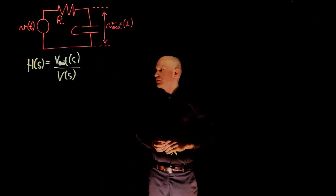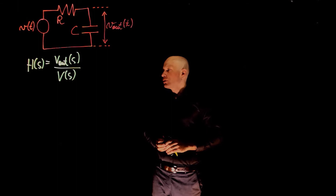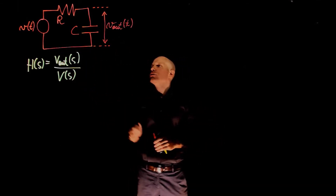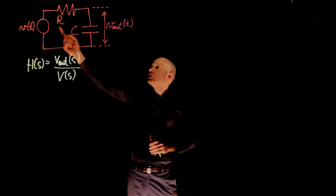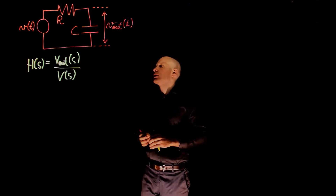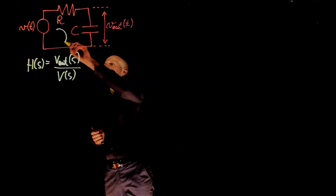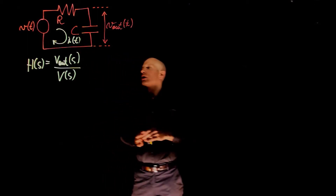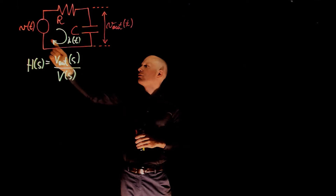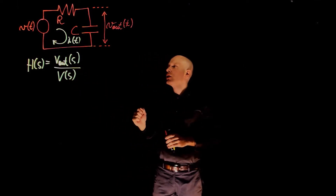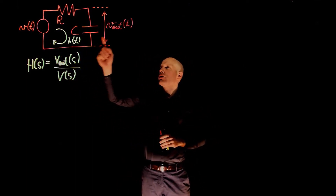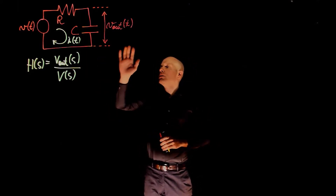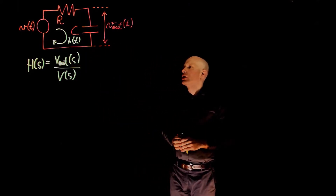In order to find this transfer function we'll need to relate the output to the input voltage, and that can be done through the current that flows in the circuit. If we call the current in this loop I of t, we can first find the relation between I of t and V of t, then find the relation between I of t and the output voltage, and then relate the input and the output through the current.